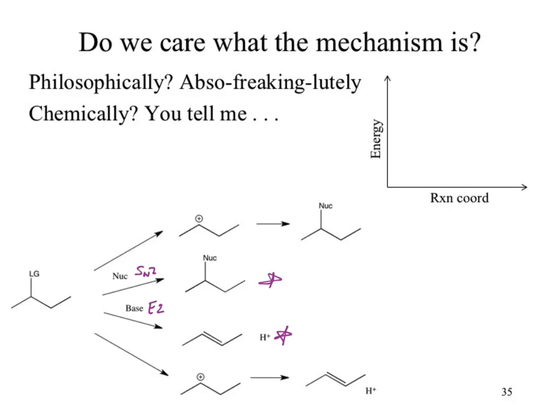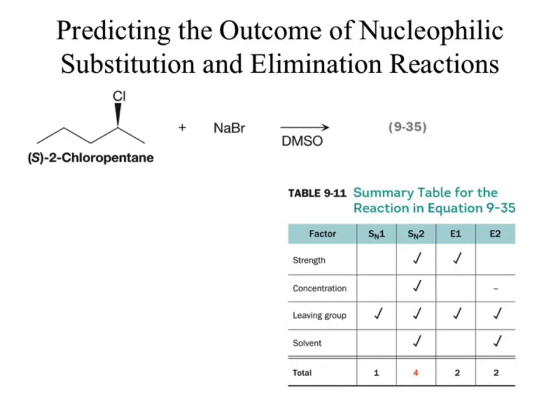How can we identify those pieces? As we go through our reactions, we'll be evaluating factors from Carty's table: strength, concentration, leaving group, and solvent. Some of those terms are a bit odd and not particularly useful. For instance, leaving group ability — you need a leaving group for SN2, SN1, E1, and E2. All of these reactions need leaving groups, so that row isn't particularly useful.